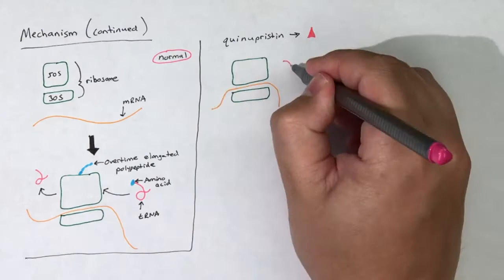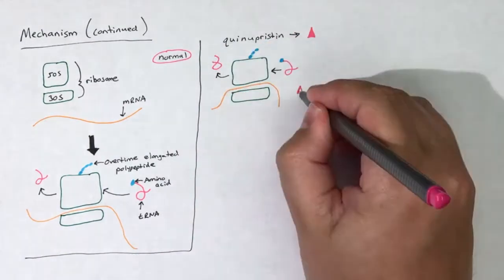Quinupristin inhibits polypeptide elongation and induces early termination of protein synthesis.